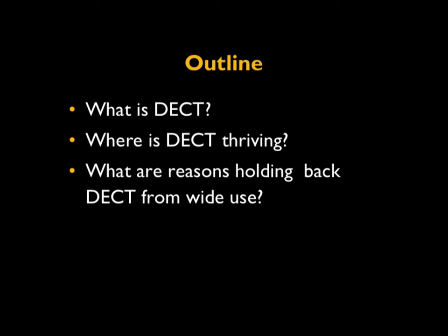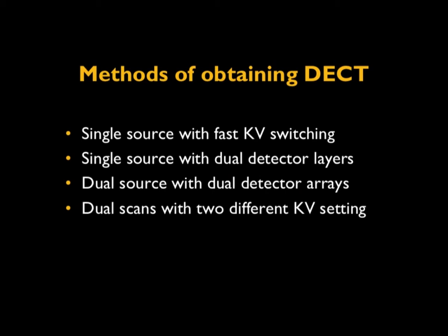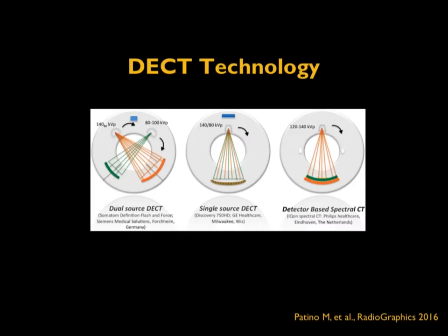Dual energy CT is often called spectral CT. It involves the generation of two x-ray photon spectra, though the method varies among CT manufacturers. There are currently four methods of obtaining dual energy CT: single source with fast tube voltage switching (kV switching), single source with dual detector layers, dual source with dual detector arrays, and dual scans with two different kV settings.